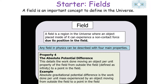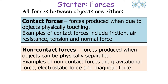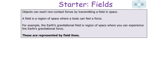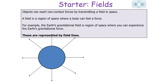All forces in physics can be categorized as contact forces or non-contact forces. Examples of non-contact forces are gravitational forces, electrostatic forces, and magnetic forces. Objects can exert non-contact forces by transmitting a field in space — a field is a region of space where a body can feel a force. For example, the Earth's gravitational field is a region of space where you experience the Earth's gravitational force, represented in diagrams with field lines.